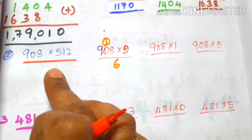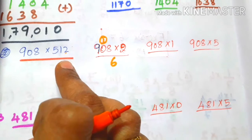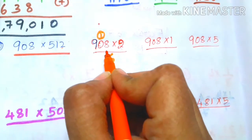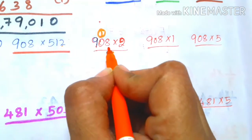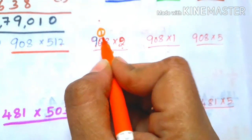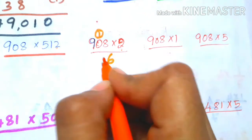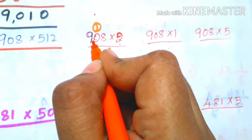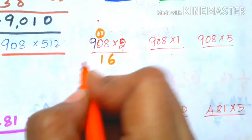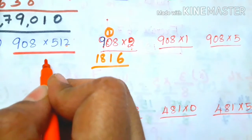Students, now the second problem: 908 into 512. First, multiply by the ones digit: 908 into 2. 2 into 8 is 16, so 6, balance 1. 2 into 0 is 0, plus 1 is 1. 2 into 9 is 18. So this partial product answer is 1816.